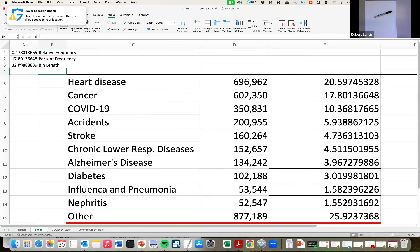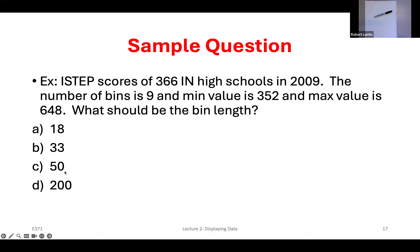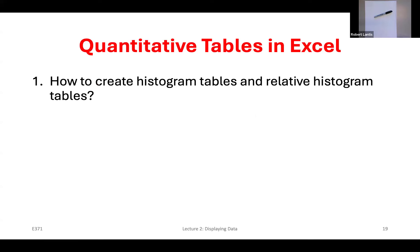Since 32.88 would give messy bin boundaries, I round up to 33. The slides show the integer values. How do I create histograms or relative histogram tables with continuous data in Excel? I'll show you an example of how to count observations into bins, especially for large data sets, and how to create relative histograms — it's going to be very similar to what we've already done.